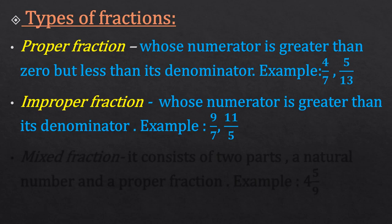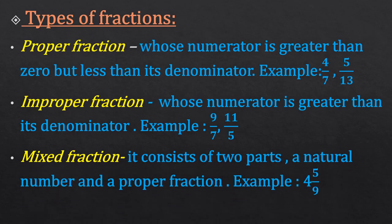The second type of fraction is improper fraction. Improper fractions are those fractions whose numerator is greater than their denominator. Examples of improper fractions are 9 upon 7 and 11 upon 5. In both these fractions, the numerator is greater and the denominator is smaller.